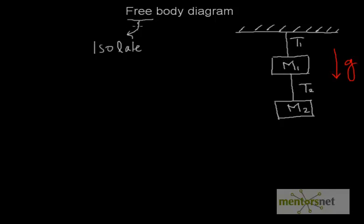There are a few steps in making a free body diagram. The first step is to isolate the body you want to analyze. Let us isolate body M2. We draw a boundary around M2 — drawn here with the yellow marker. This boundary contains M2 and only M2; there are no other bodies inside it.